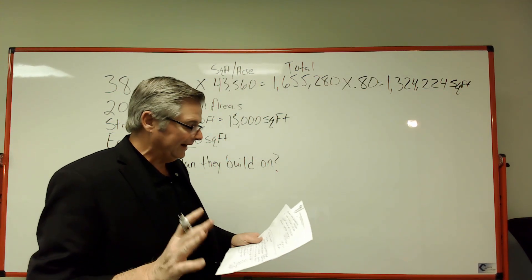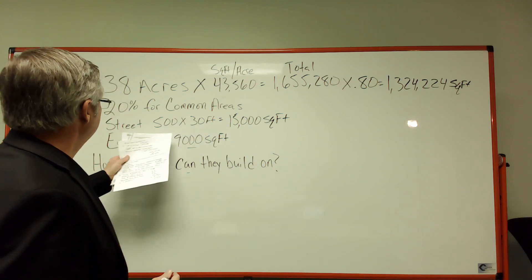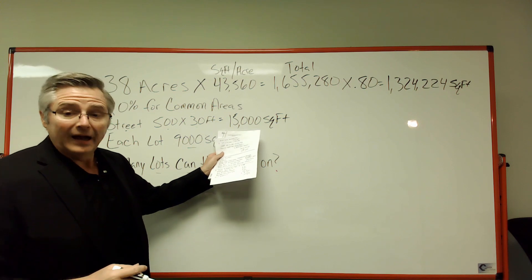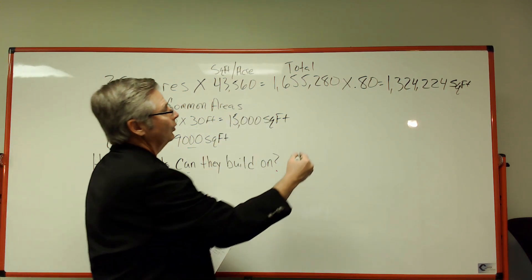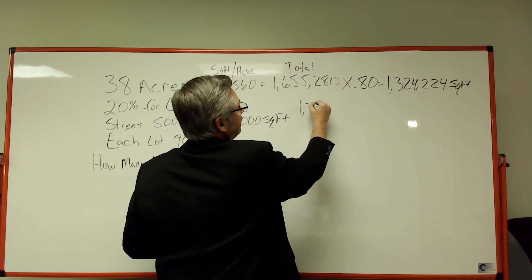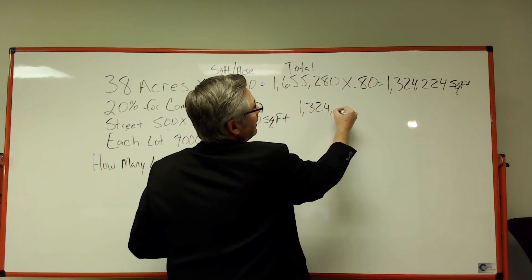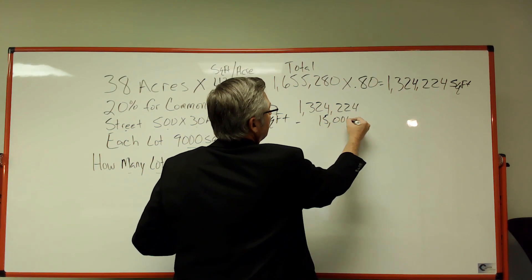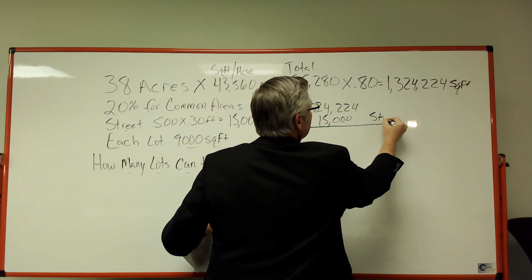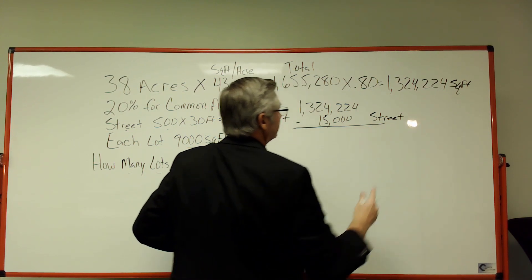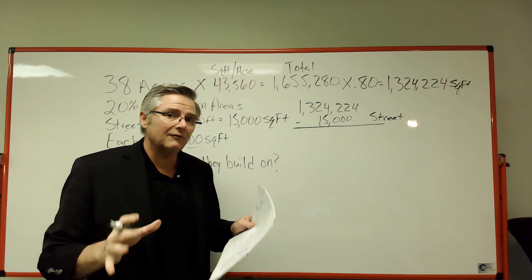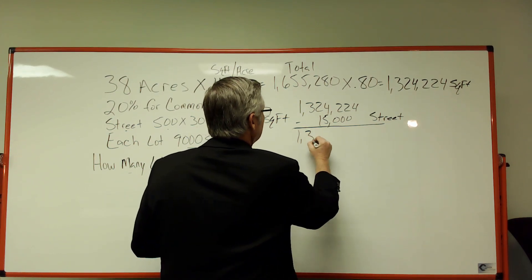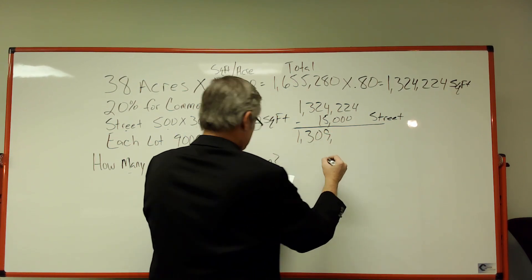But that's not all, folks. They said we have a street that's going to be 500 by 30 feet — that's 15,000 square feet right there. So I'm going to take that 1,324,224 and subtract that 15,000 square feet for the street. Now that's going to give me the total square feet that I've got to build these houses on.